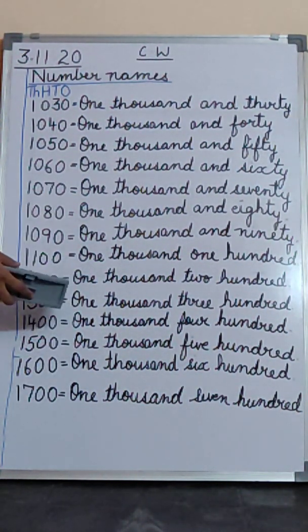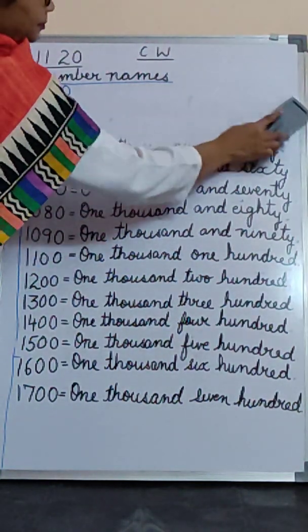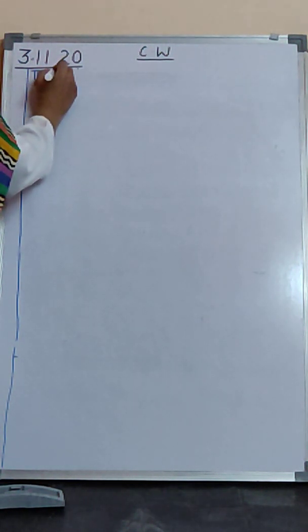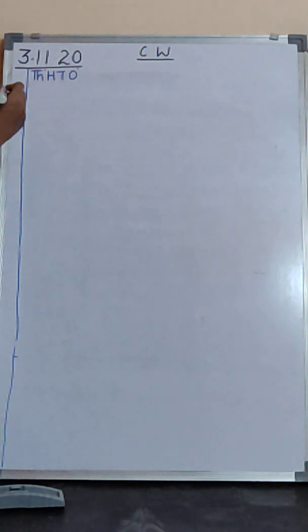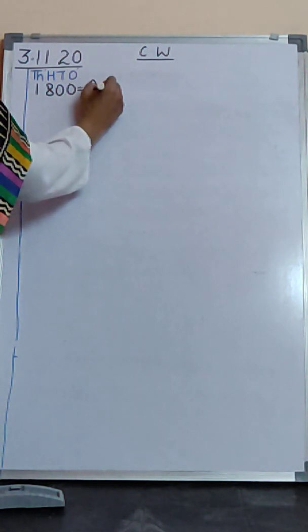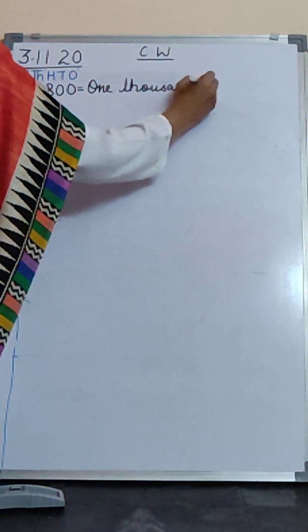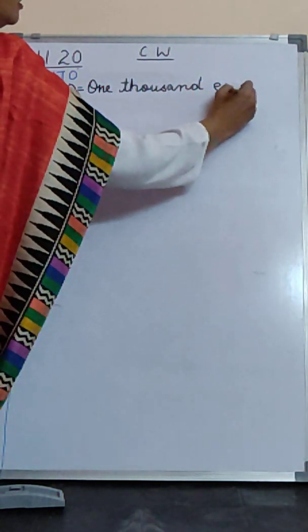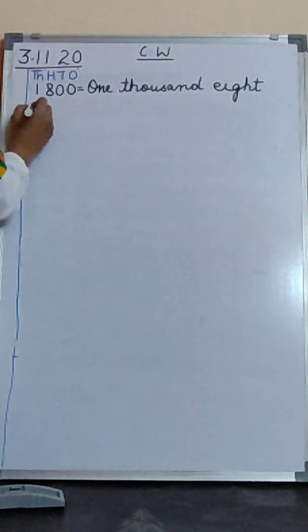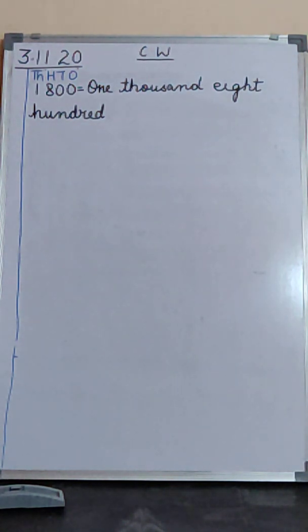Now boys, I am rubbing this board and now I will write 1800 from the top. Thousands, hundreds, tens and ones. So now we wrote 1,700. Now we write 1,800. One thousand, T-H-O-U-S-A-N-D. 1,800. Alright.